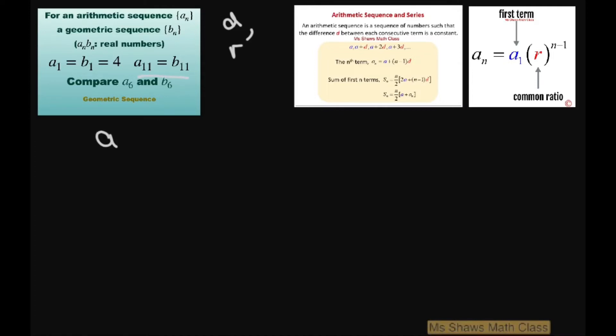We have a_11, that's going to equal 4 plus 11 minus 1 times d. This equals 4 plus 10d.